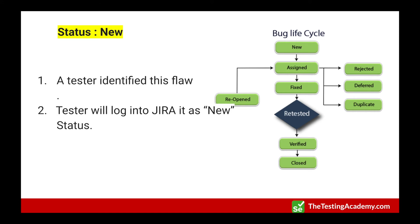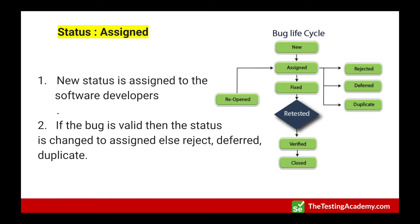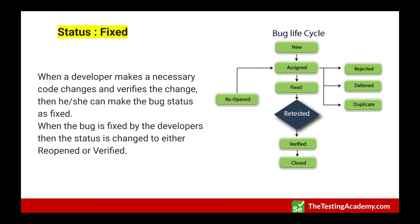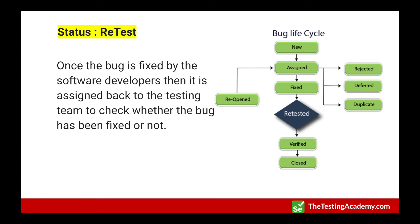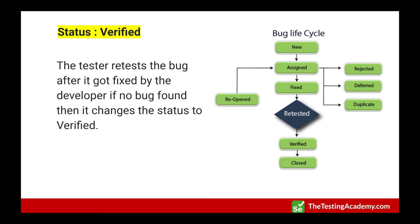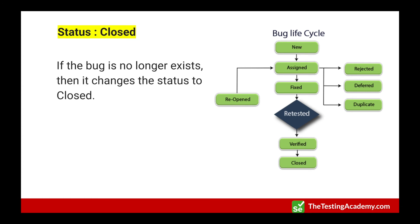So to recap step by step: 'New' is when a tester identifies and logs the bug in JIRA. 'Assigned' is when the developer changes the status based on validity. If valid, it becomes 'Open'. After fixing on a certain environment, it moves to 'Fixed'. The tester then retests it — if still a bug it gets 'Reopened', if fixed it goes to 'Verified'. After verification, if everything works fine, it moves to 'Closed' and goes live to production.